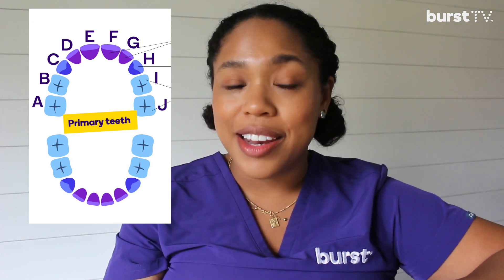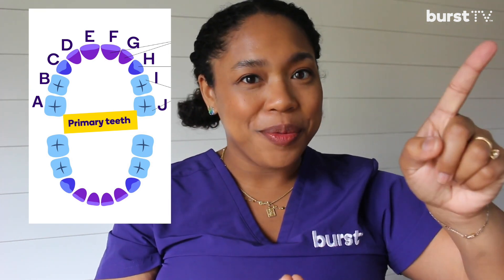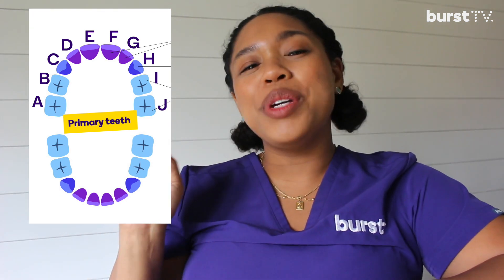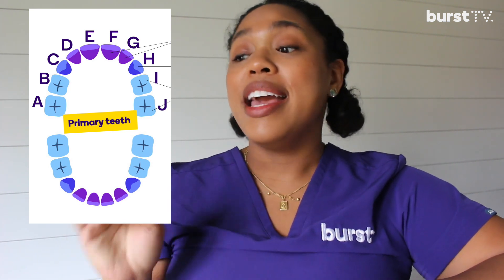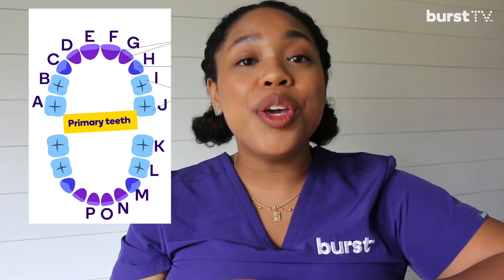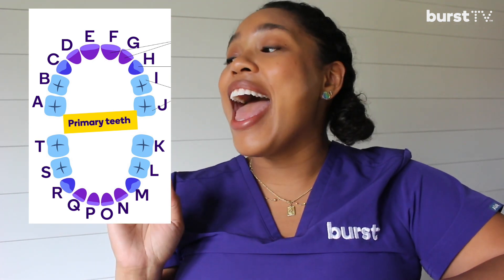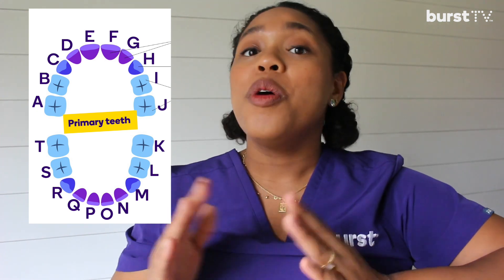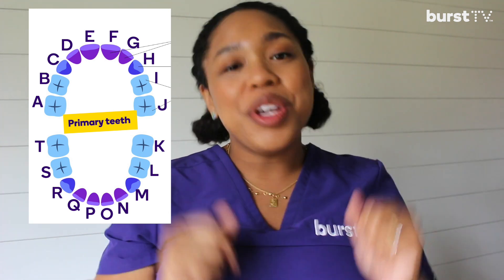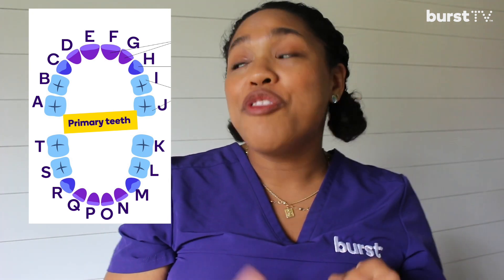Now moving to the bottom teeth, we start with the last letter on your left side. Since we left off with J, we continue: K, L, M, N, O, P, Q, R, S, and T. That completes the primary teeth — 10 on the bottom and 10 on the top. Your primary teeth go from A to T.